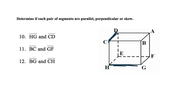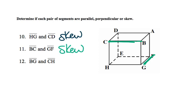HG and CD: one is going up left to right and one is coming towards us. They're going in two separate directions, making this skew. BC and GF: one is coming towards us and one is going left to right — again two separate directions, so they never intersect, making this skew.